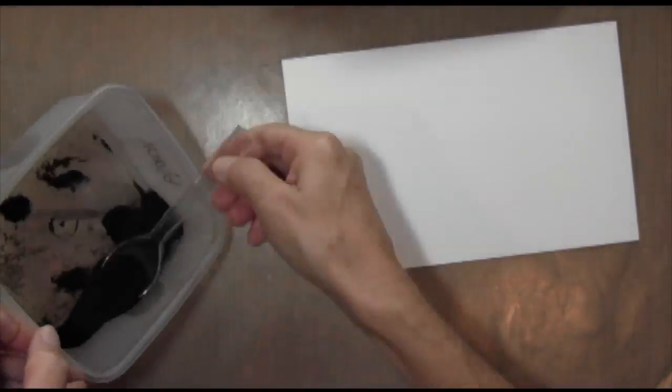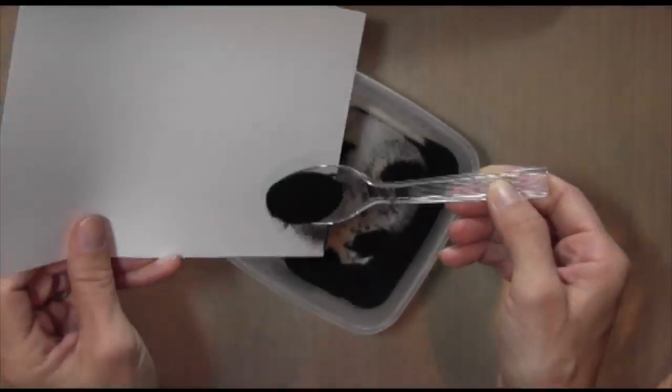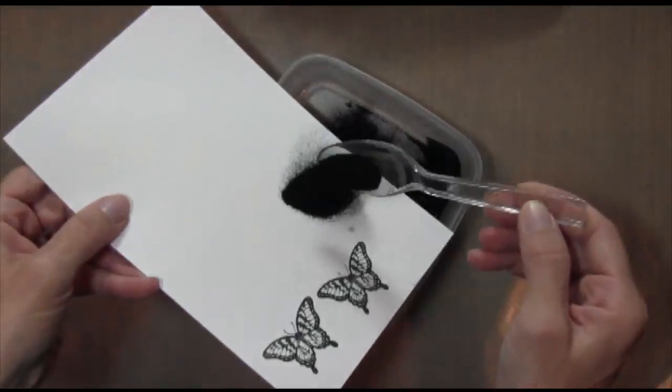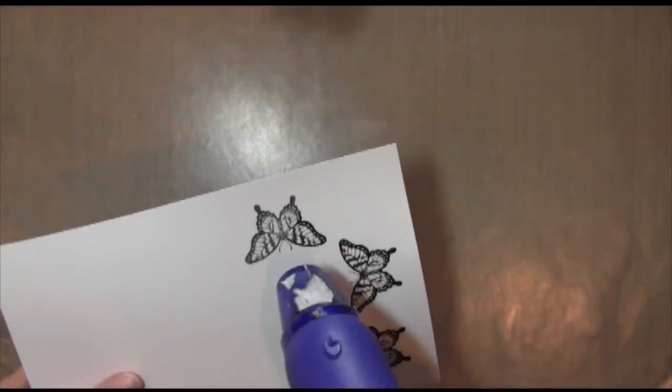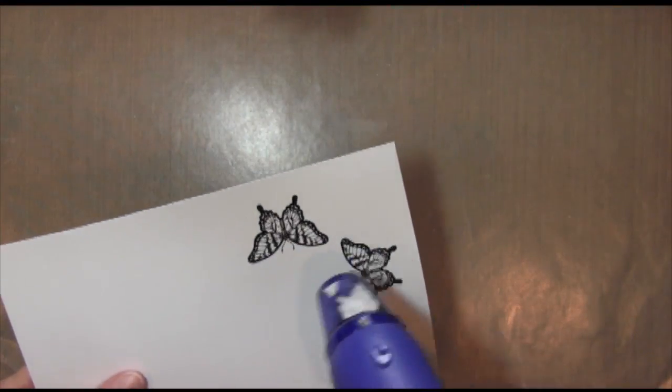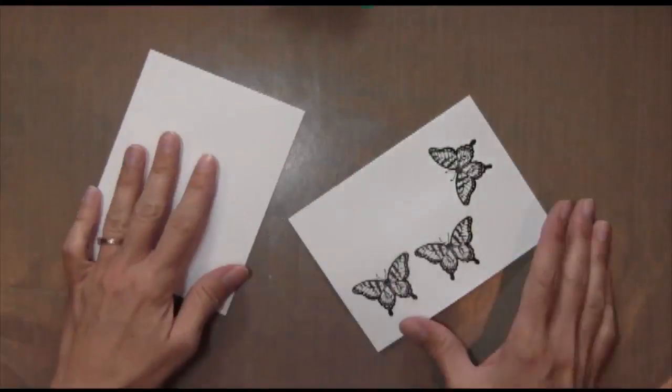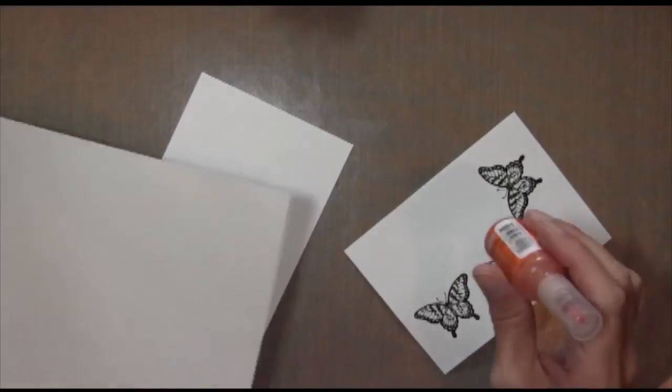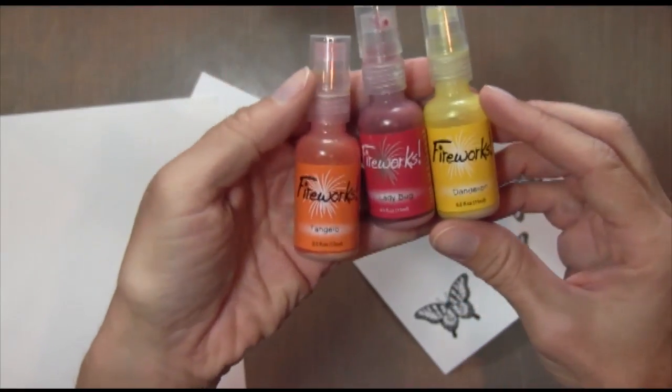I'm stamping it in Versamark ink because I'm going to emboss it with black embossing powder. I'm going to heat it to set it, and then I'm going to set up my little spray area. So I just used a 12x12 scrap piece of paper.